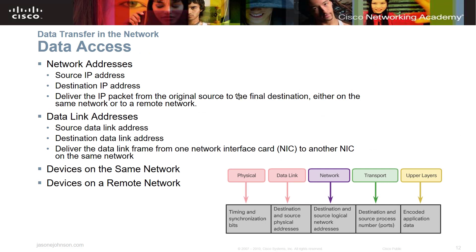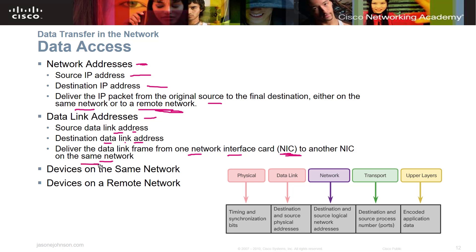Data access involves network addresses and data link addresses. Network addresses include source and destination IP addresses (IPv4 or IPv6) and deliver packets from original source to final destination, whether on the same or a remote network. Data link addresses — source and destination — deliver frames between NICs on the same network. You need a network address to reach a remote network.